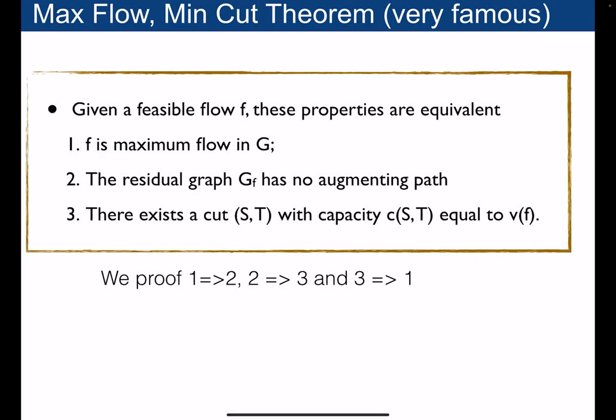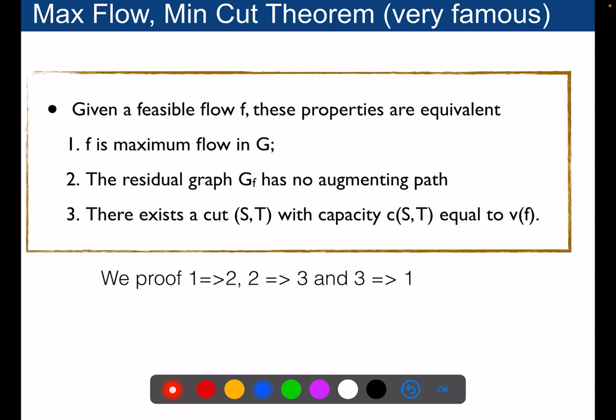Kino states the very famous theorem, the Max-Flow-Min-Cut theorem. The Max-Flow-Min-Cut theorem is composed of three equivalent properties: 1, 2, and 3. The properties are related to a graph and a feasible flow F. These three statements are completely equivalent.